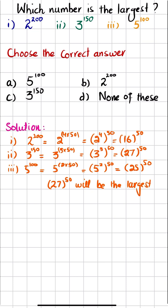So the correct answer is C. And if you write the order, we can write as 27 power 50 is greater than 25 power 50, is greater than 16 power 50. So that will be the answer.